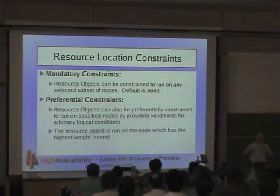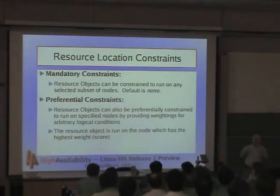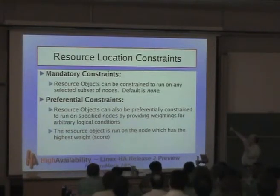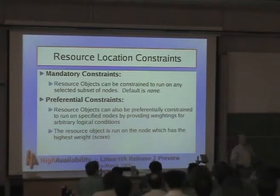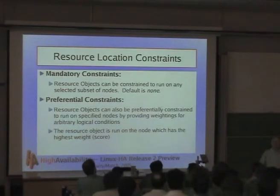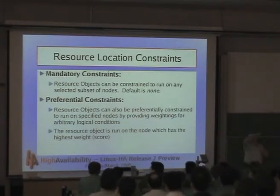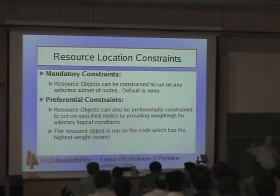You can have mandatory constraints and preferential constraints. A mandatory constraint tells a resource it has to run on one of these machines — for example, a machine that has a fiber channel attachment to the disk. With DRBD's two-way mirroring, it has to run on either this machine or that machine. The default is that a given resource can run nowhere, so if you don't tell it, it won't run anywhere. Preferential constraints say 'I would really rather it didn't run on the same machine as this, but if it has no choice, like all other machines are down, it will run somewhere else.' It tries to satisfy mandatory constraints first and preferential constraints second.